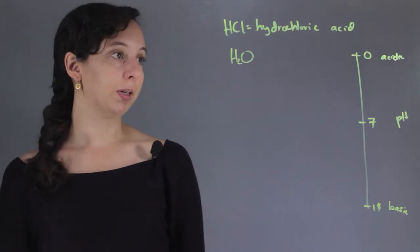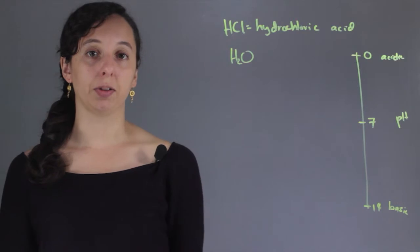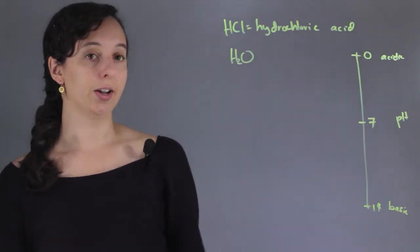So what happens to the pH of water if you put hydrochloric acid in it? Well just from the name you can probably guess it's going to become acidic since this is hydrochloric acid, and that's correct.